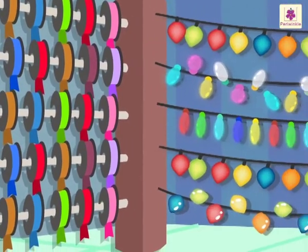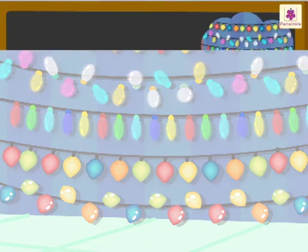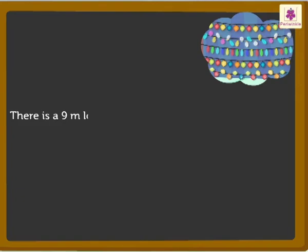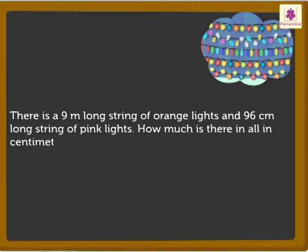Now, let's buy some decorative lights. Look, there is a 9 meter long string of orange lights and 96 centimeters long string of pink lights. How much is there in all in centimeters?